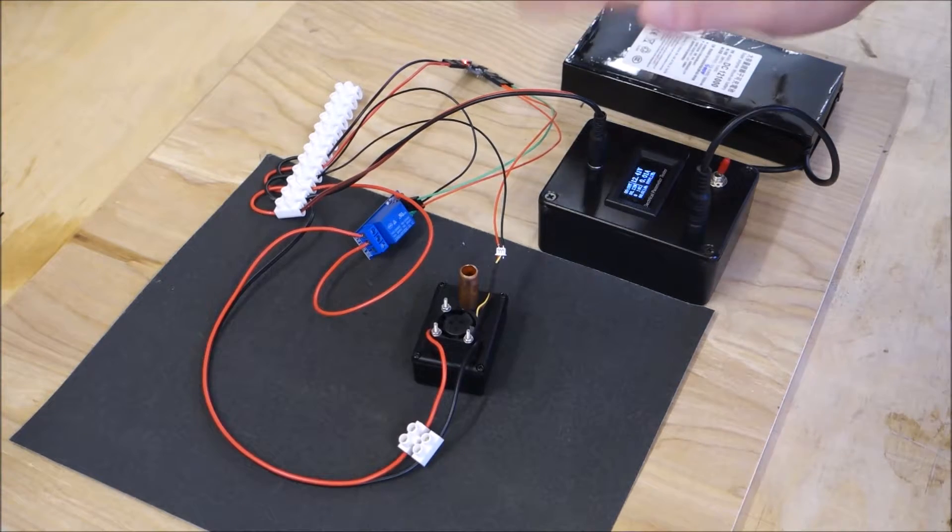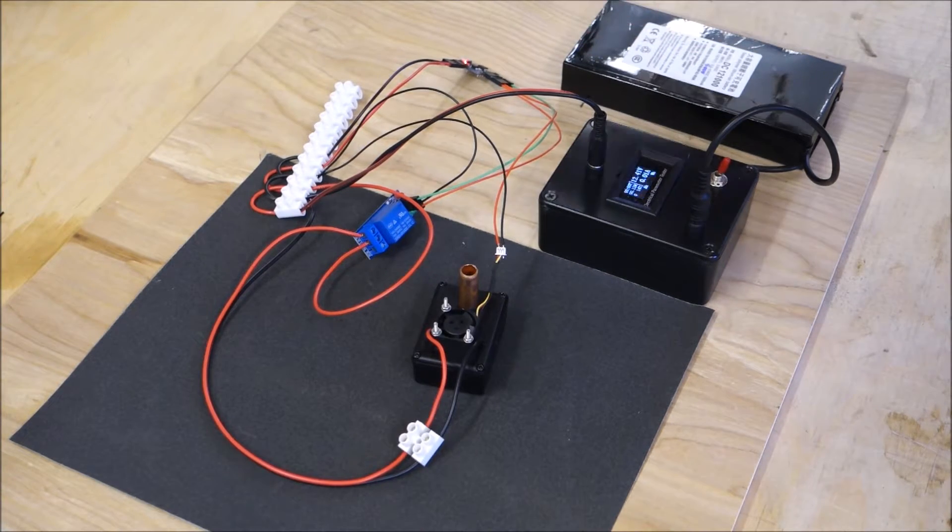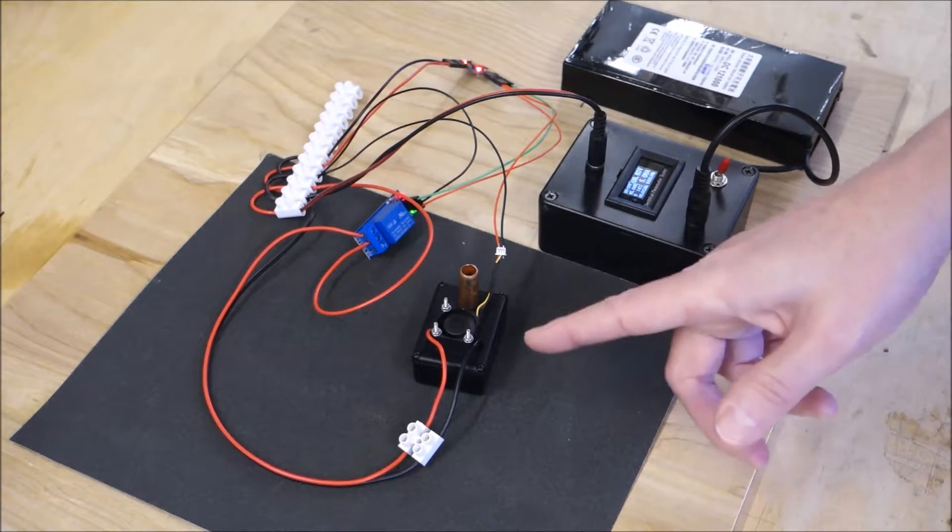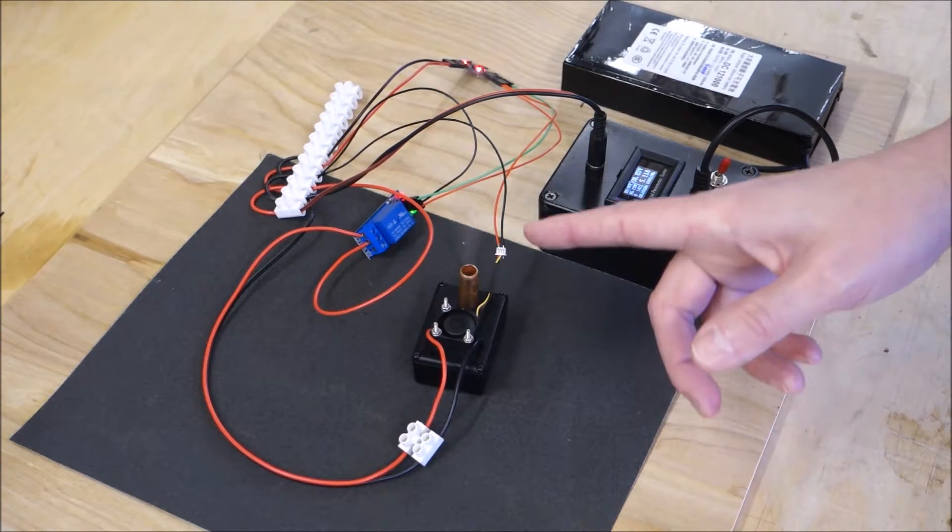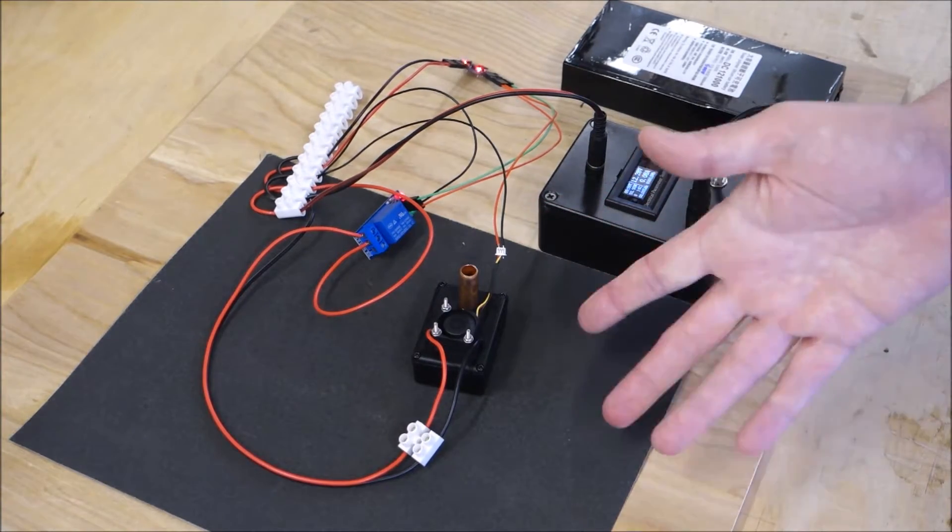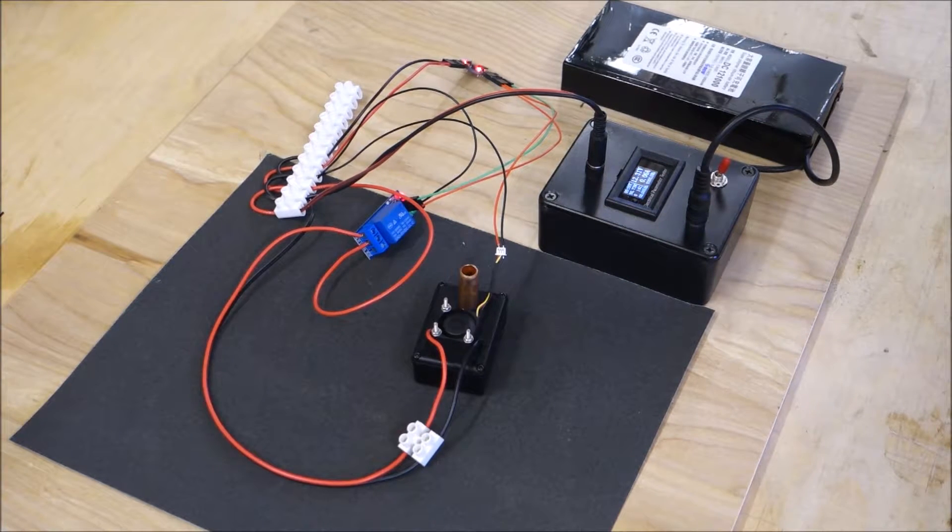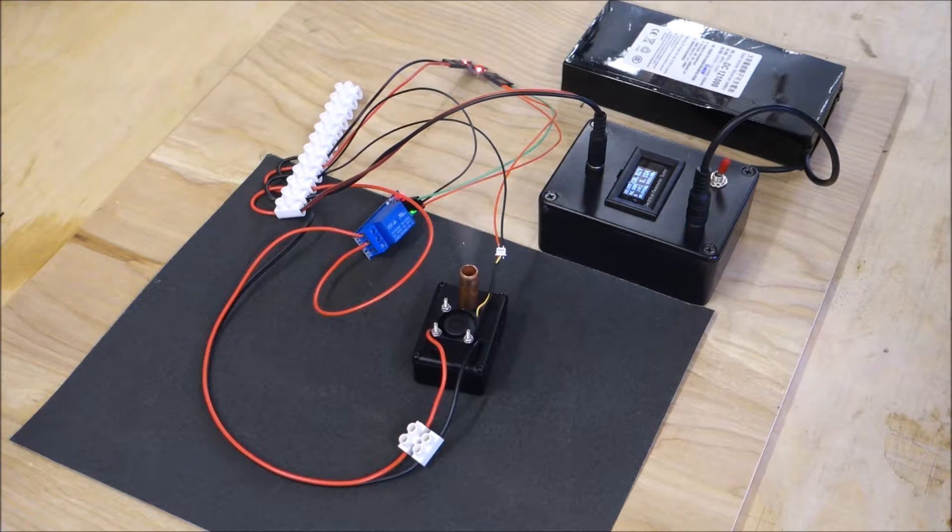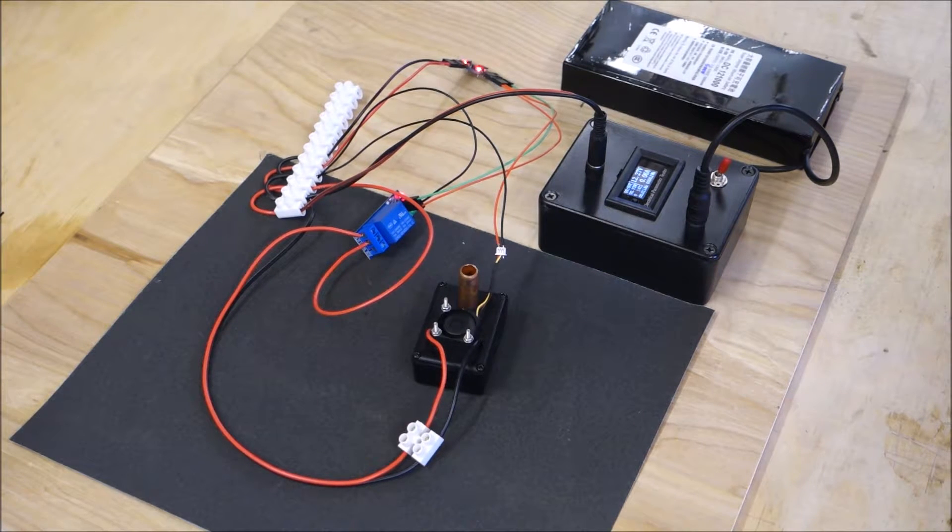So we just wait for the Digi Spark to start up, and there it goes. So you see the fan goes off, there's smoke coming out, four seconds on, four seconds off. So that's drawing about nearly nine volts and about five amps, running about 45 watts.